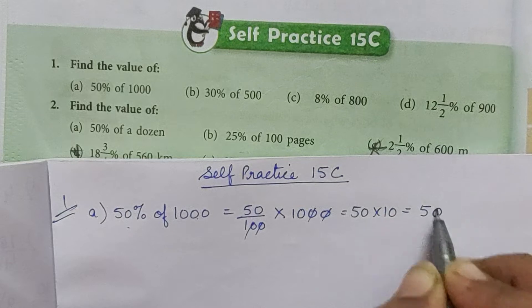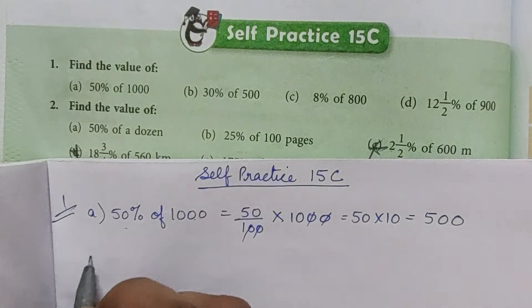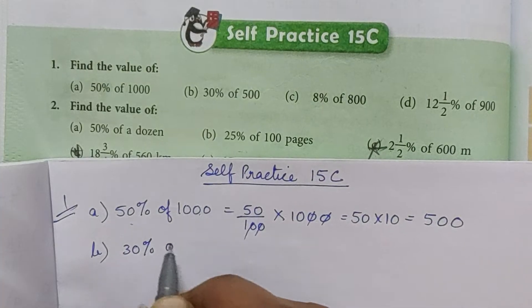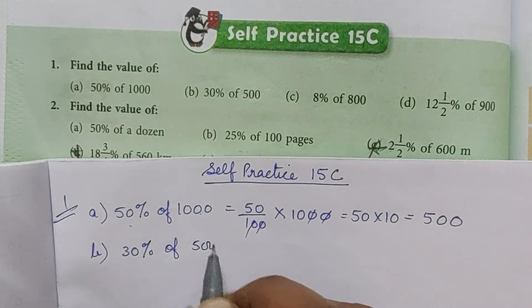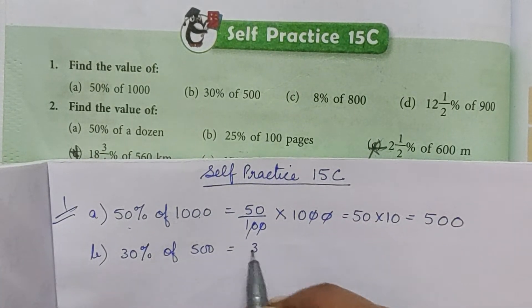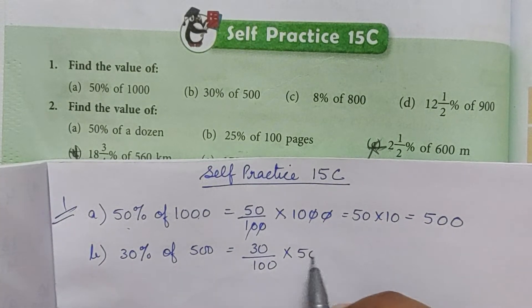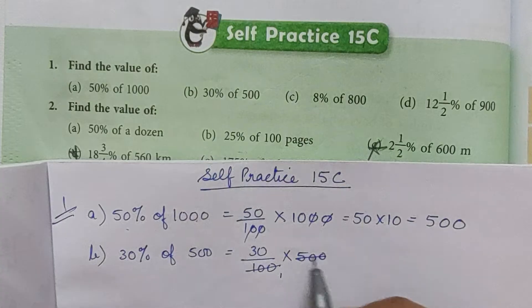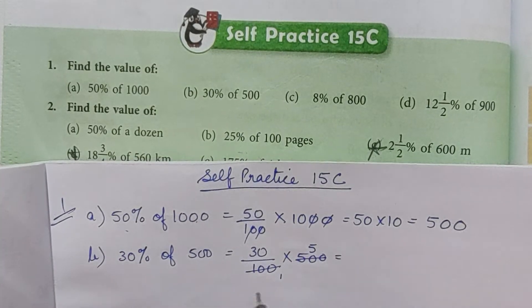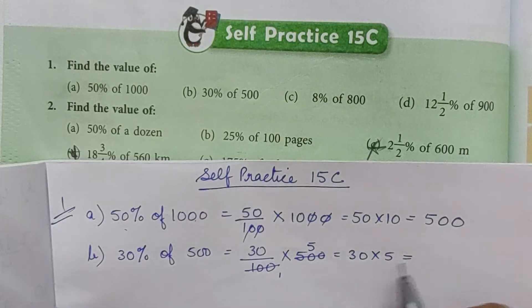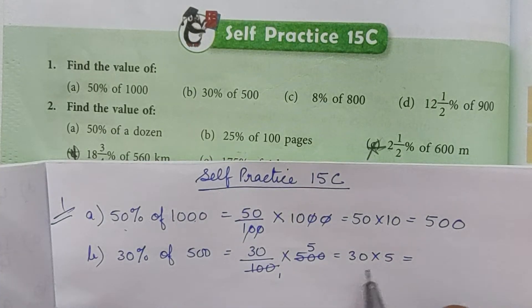Part b: 30% of 500 is equal to 30 by 100 into 500. 100 ones are 100, 100 fives are 500. I will multiply 30 by 5, so three fives are 15 and one zero, equals 150.